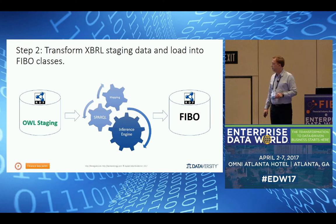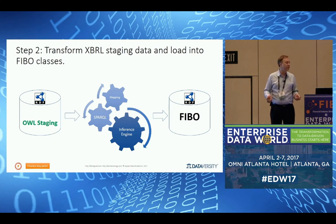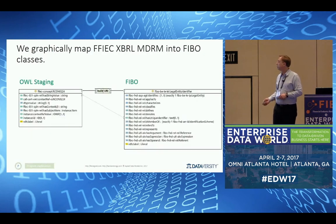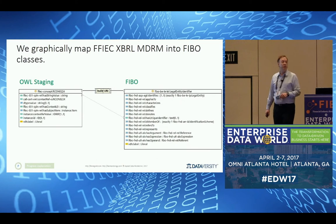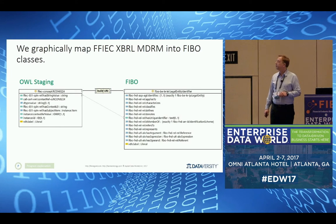The way that works: these gears here represent the inference engine — that's the motor. It works through the mapping we define, then executes the load into target using SPARQL CONSTRUCT, which is the same as SQL INSERT. In the ontology editor, we pull in our source from staging — the FFIEC concept for the legal entity identifier — and on the target side FIBO already has a legal entity identifier. We connect the two classes and tell the tool how to build the URI. Likewise, we can take a data property — the actual value of the LEI — and copy it to the unique identifier in the FIBO LEI.